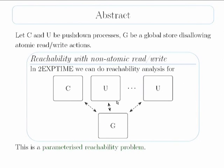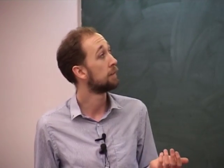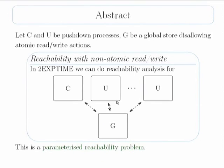To begin, I'll state my main theorem — if you know the story you can probably fall asleep for a bit. We're going to take two pushdown systems: C, which we can think of as a controller process, and U, which we can think of as a user process. We put them in parallel: one copy of C and an arbitrary number of U. The whole point is that this number of copies is not fixed from the start — it's part of the problem to discover how many copies of U we can get away with.